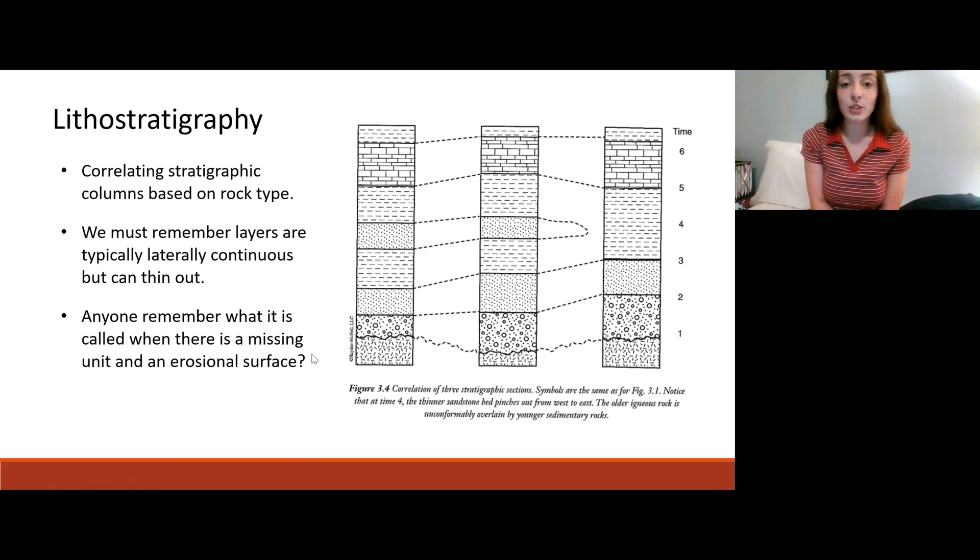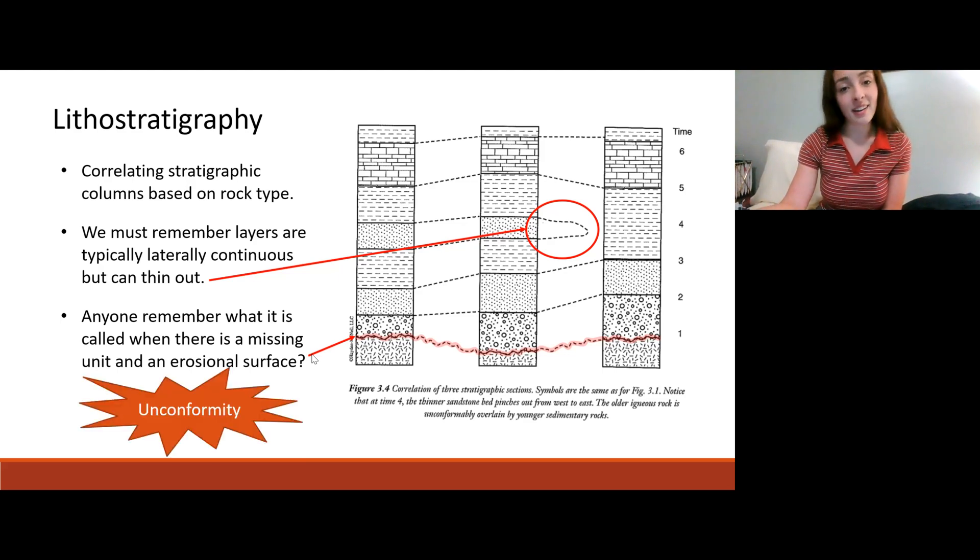When we're using lithostratigraphy to correlate strat columns we must remember to take into account layers that might thin out. For example the sandstone layer in this figure thinned out going from left to right. We also need to take into account other indications of missing sediment such as erosional surfaces which are typically indicated by a squiggly line. Now pause the video and tell me if you remember what we call erosional surfaces or erosional contacts. The correct answer is an unconformity.